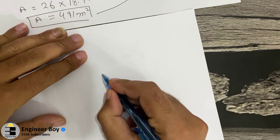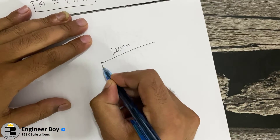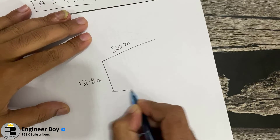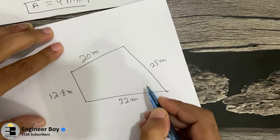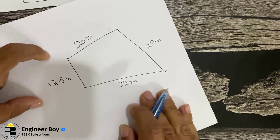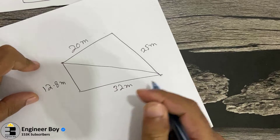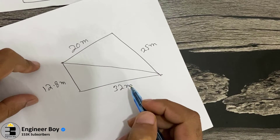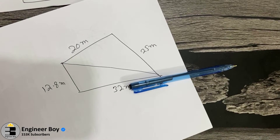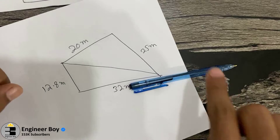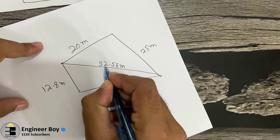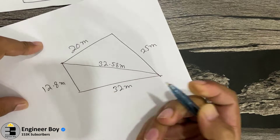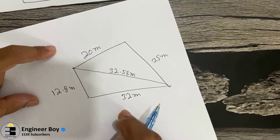Let me redraw the diagram. This side is 20 meters, this one is 12.8 meters, this one is 32 meters, and this one is 25 meters. I asked my friend to measure the diagonal with a measuring tape at the property. He said it is 32.50 meters, or 32 meters and 58 centimeters — so 32.58 meters.